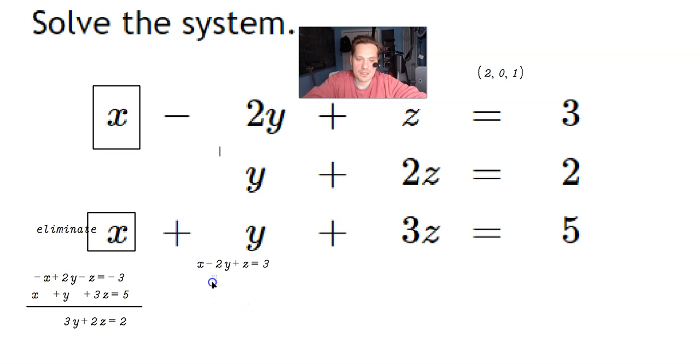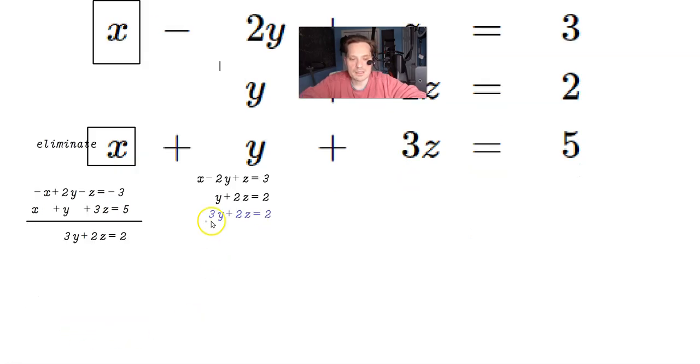You copy the second equation completely unaltered: y plus 2z equals 2. Then now you replace the third equation with this new equivalent third equation, which is 3y plus 2z equals 2. Now let's get rid of the 3y.